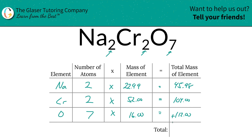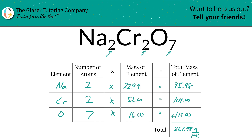To find the total mass of the compound, all you simply have to do is add up that column. So the total mass here is going to be 261.98, and that's in grams per mole because we're solving for molar mass.